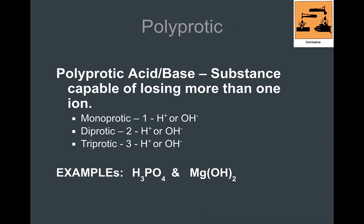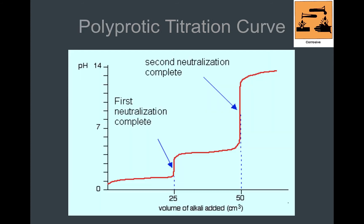When you have a polyprotic acid or base, that means it has more than one proton. Something like HCl is a monoprotic acid because it only has one proton, but a polyprotic acid could be H₂SO₄ or H₃PO₄ — those can lose more than one hydrogen ion. When you look at a graph of a polyprotic titration, every time it loses one of those H-plus ions, you hit an equivalence point. For example, a diprotic acid would show two equivalence points.